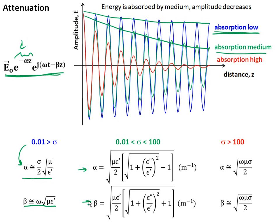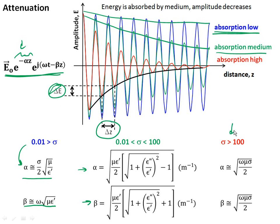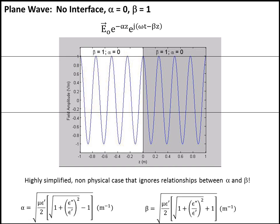For very high absorption with large values of sigma — greater than about 100 siemens per meter — there is a rapid exponential decay, with significant changes in the electric field over very short distances. In this case alpha and beta can again be simplified and take the same form. The electric field drops off so quickly that just a couple of wavelengths into the material there's essentially no field left, which is what we'd expect since we don't have electric fields inside conductors.